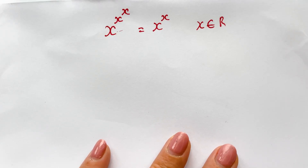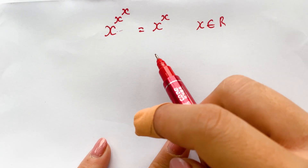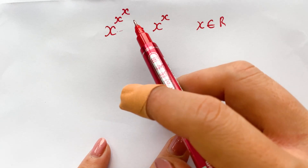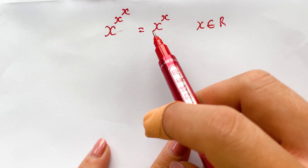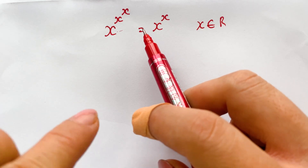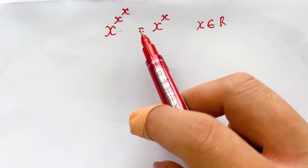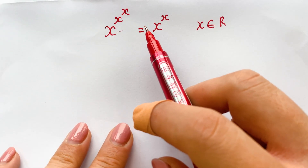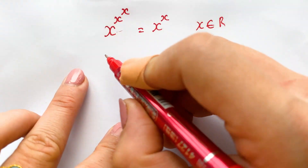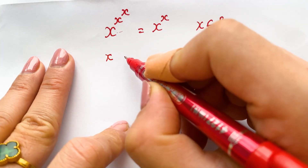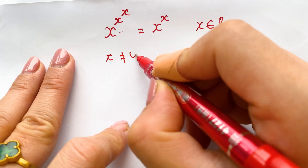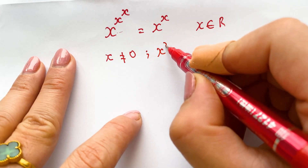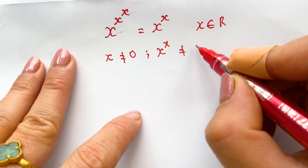Hello everyone. How to find the value of x for the exponential equation x^(x^x) = x^x. To solve this equation you need to use logarithms, but it's obvious that when x is not equal to 0, x^x is also not equal to 0.